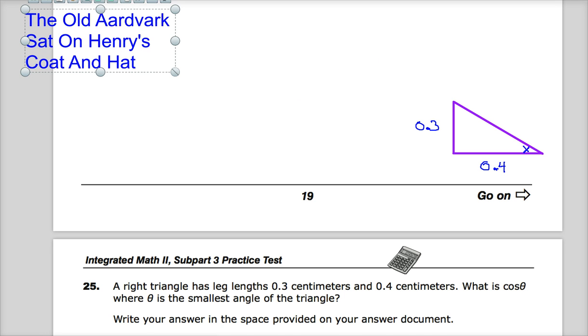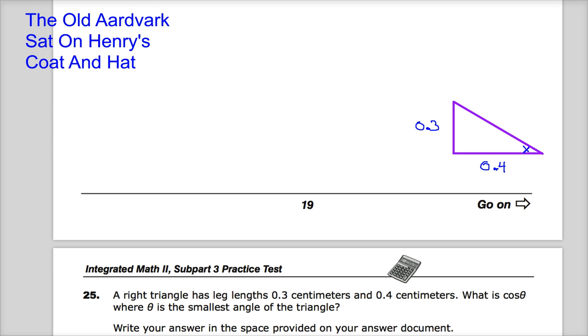So I'm going to use my old standard, the old aardvark sat on Henry's coat and hat, because that's kind of what I'm comfortable with. And it would be, tangent would be opposite over adjacent. Sine would be opposite over hypotenuse. But cosine would be adjacent over hypotenuse. So I'm going to write cosine equals adjacent over hypotenuse. That's the ratio.